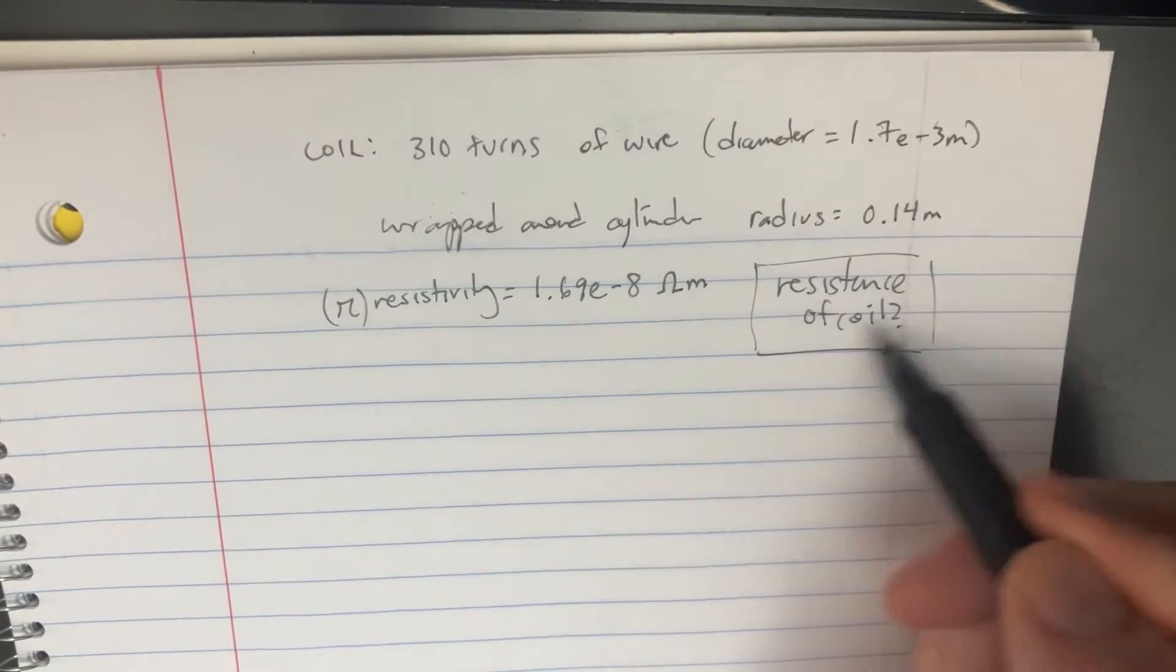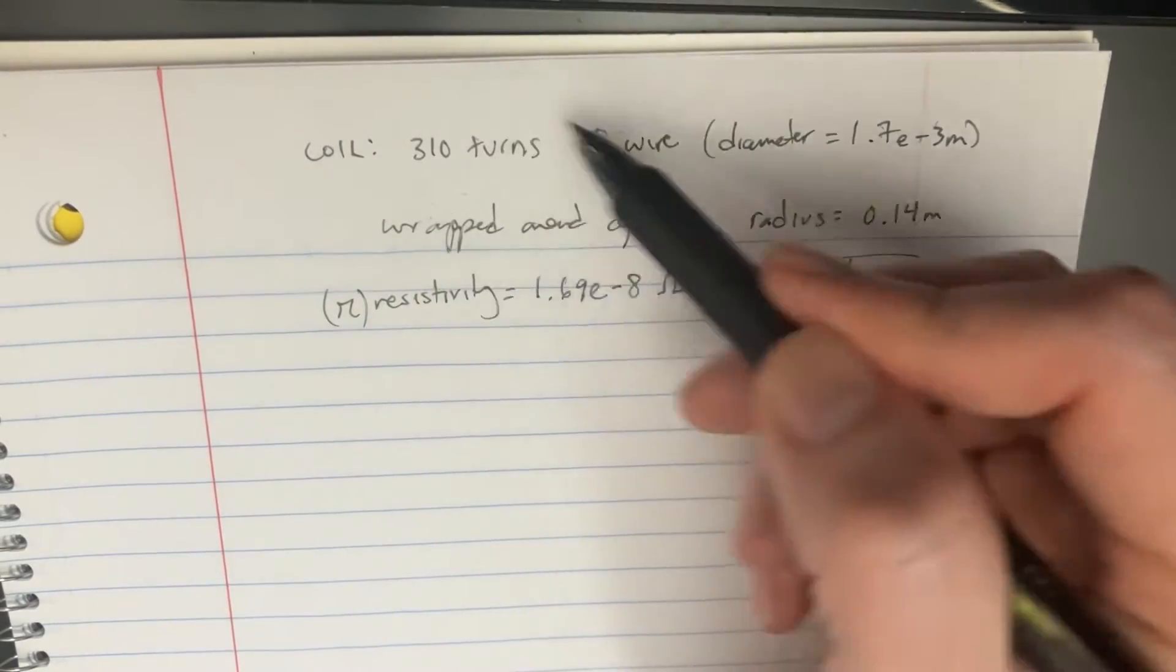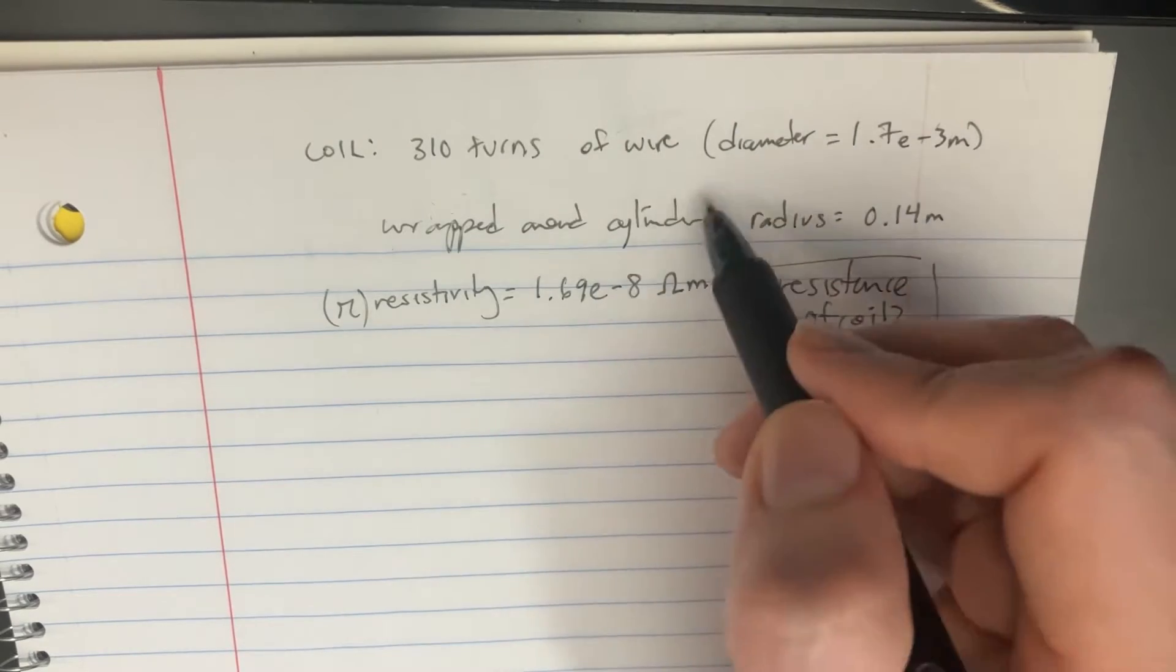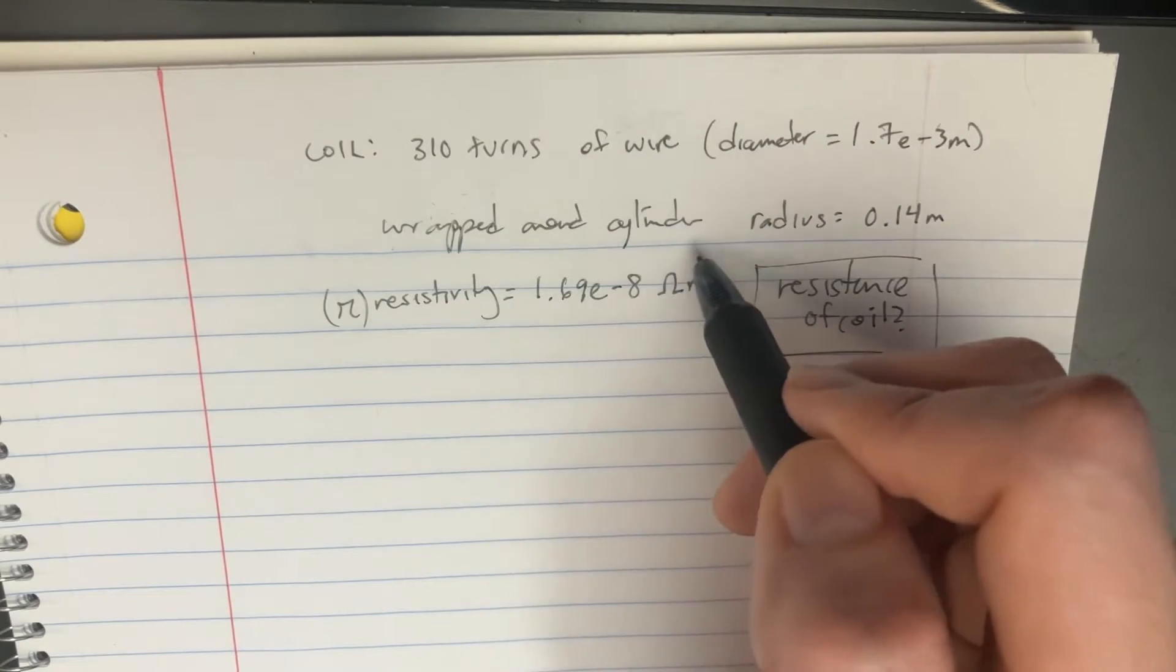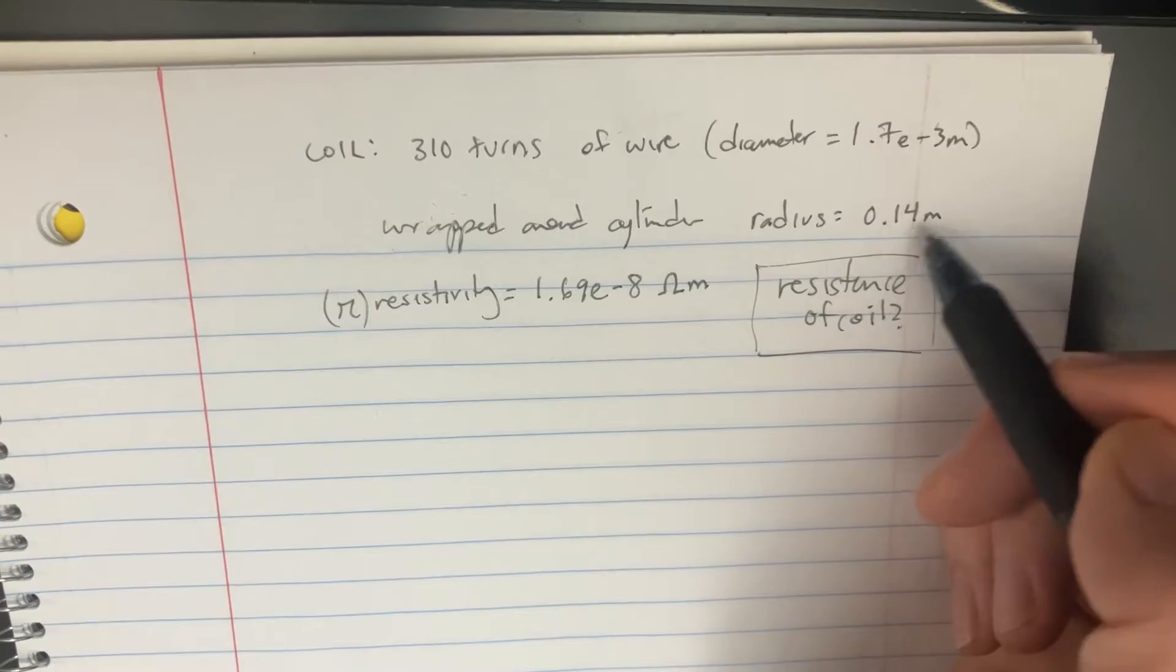In this problem, we're trying to find the resistance of this coil that's wrapped 310 times around a cylinder. The cylinder has a radius of here.